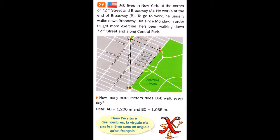We have data: AB equals 1,200 meters and BC equals 1,035 meters.